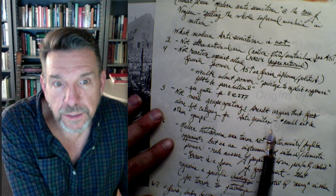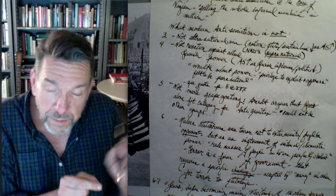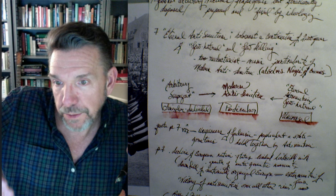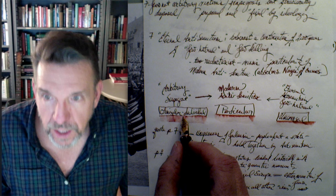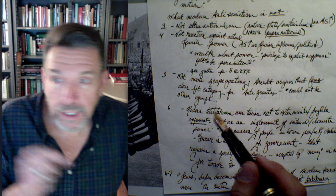Fifth point: it's not mere scapegoating. Arendt argues that Jews alone fit the category for antisemitism — it could not have been another group. One simple folk narrative about the Holocaust was that Jewish people were an arbitrary scapegoat — that they were powerless and therefore chosen, but that it could have been anyone. Arendt argues that is not the case. Modern antisemitism could only have been structured around Jewish people. She says on page 6 that modern totalitarianism uses terror not to exterminate or frighten opponents, but as an instrument of domestic power.